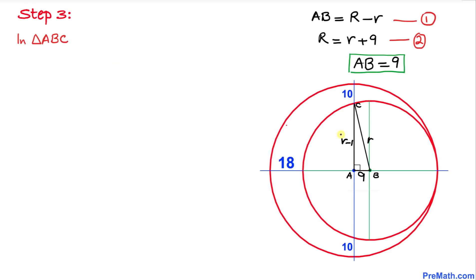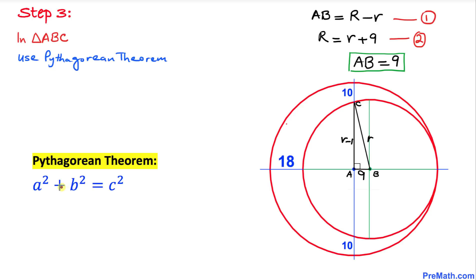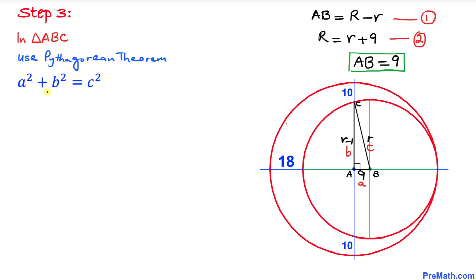Focusing on triangle ABC, we know it is a right triangle, so we apply the Pythagorean theorem: A² + B² = C². In our triangle, the hypotenuse C is uppercase R, side A is AB = 9, and side B is AC = r minus 1. Filling in: 9² + (r − 1)² = R².